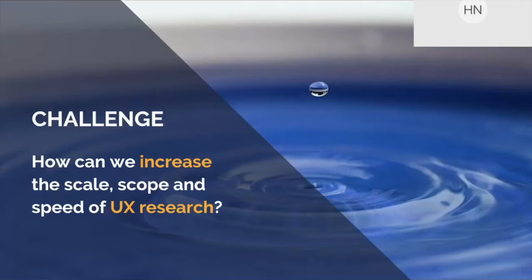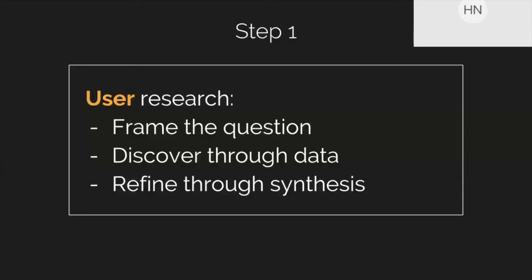How can we work in these complex, large spaces that might be siloed and have a wide range of roles involved in the process? This was the starting point for my case study: how can we increase the scale, scope, and speed of UX research so that we're making the right decisions when delivering foundational software or services for users? It's a large, tough question. The place I chose to start was conducting internal user research, which comes naturally to me as someone from a design and research background. I started by framing the question, discovering through data, and then refining through synthesis.